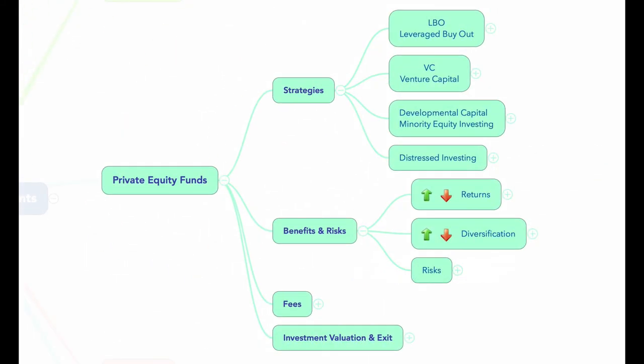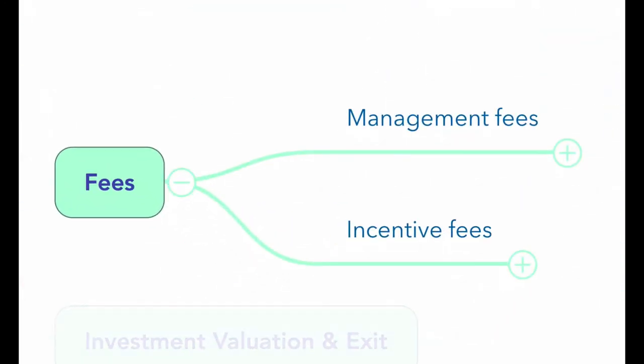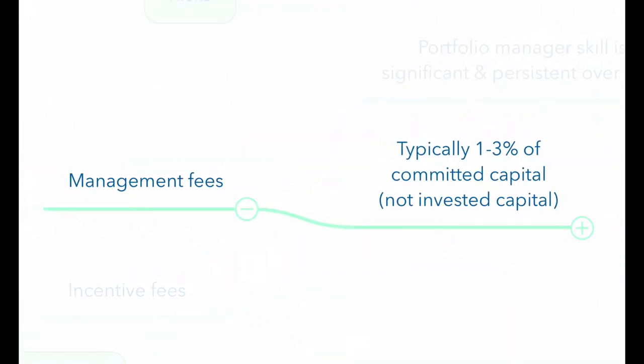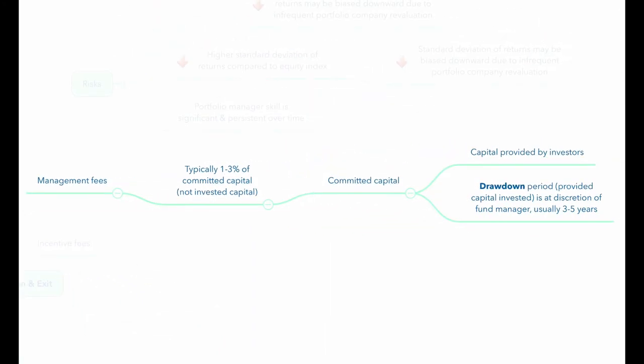There are two major components of fees: management fees and incentive fees. The management fee is typically one to three percent of committed capital, not invested capital. Committed capital refers to the capital provided by investors, which is drawn down over a period of time and once drawn down is referred to as invested capital. This drawdown is at the discretion of the fund manager and usually occurs over a three to five year period.